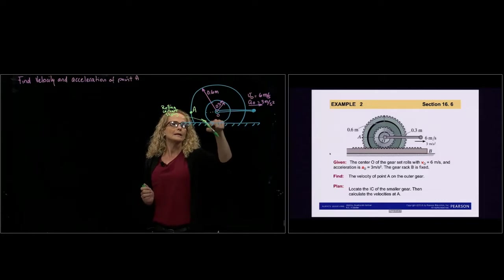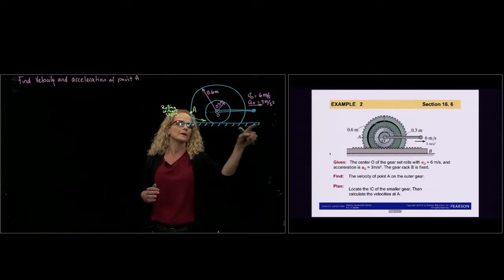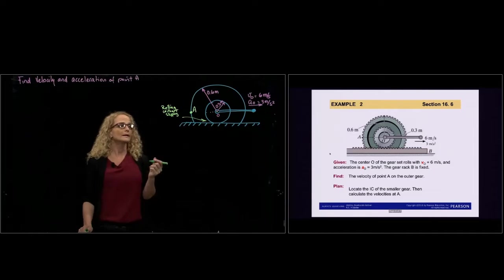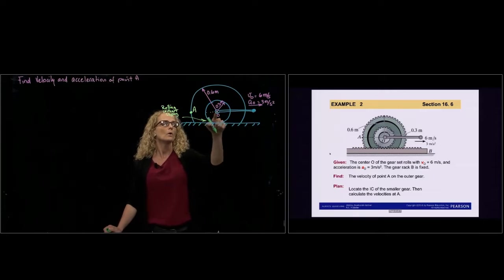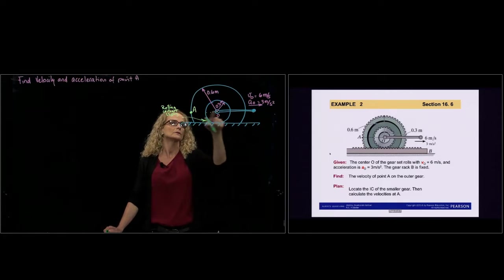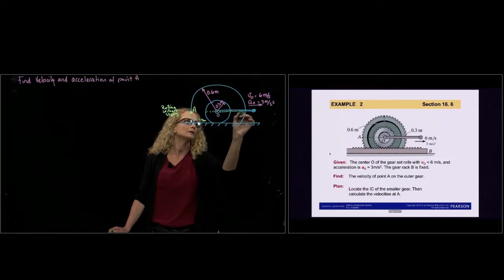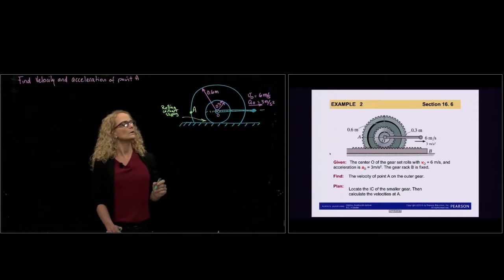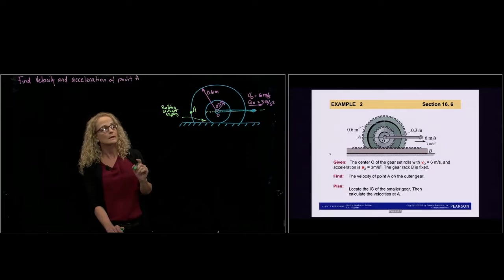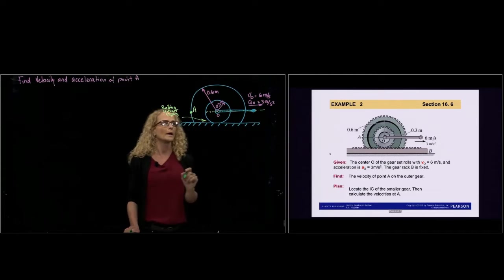The smaller gear rolls without slipping over the flat surface. And we are giving the velocity of point O, which is linear velocity, because this rolls and that moves in the trajectory that is linear. And we are giving that velocity, which is 6 meters per second, and an acceleration, which is 3 meters per second squared.